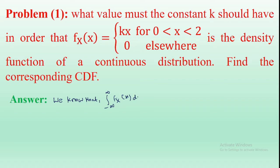We know that the area under the probability density function — that is, the integral from minus infinity to infinity of f(x) dx — is equal to 1. Using this expression, first find out the constant K value: integral from minus infinity to infinity.